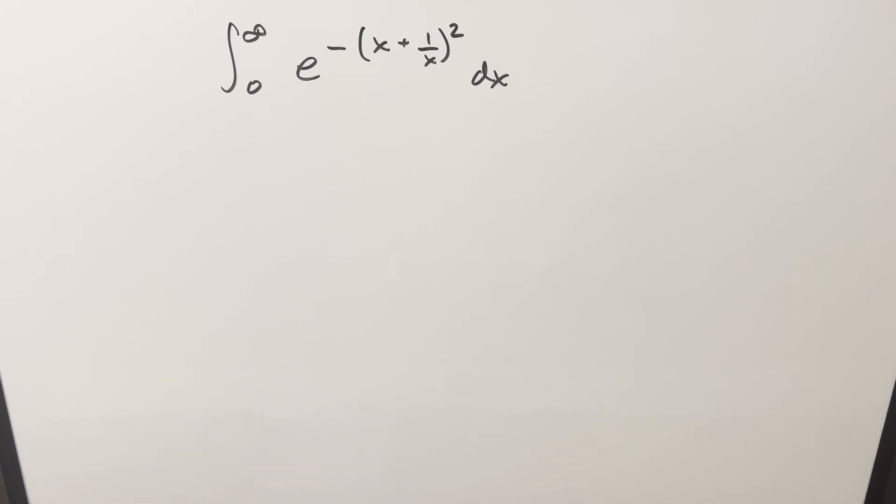Okay, we have a really fun integral here today. This was sent to me by Vengeance, YB8LM. We've got the integral from 0 to infinity, e to the minus (x plus 1 over x) all squared dx. Now it should be pretty easy to see the similarity here to the Gaussian integral.